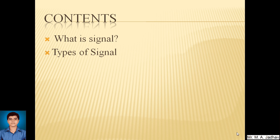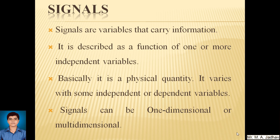Main points to be discussed today are what is a signal and then types of different signals. Signals are variables that carry information. It is described as a function of one or more independent variables. Basically it is a physical quantity that varies with some independent or dependent variables. Signal can be one dimensional or multi-dimensional.